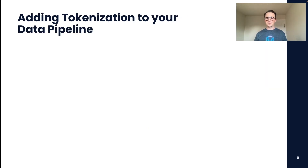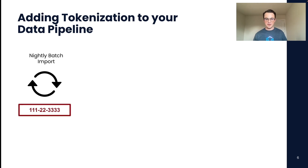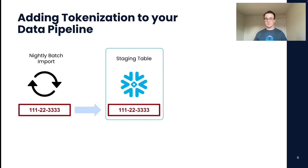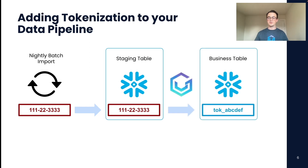Finally, how do we add tokenization into your data pipeline? Let's say we have a nightly batch import process that is taking in data from your vendors. This data has social security numbers in it and we want to import it into your Snowflake instance. The first thing we'll do is set up a staging table in Snowflake, configured so that only database administrators or administrators of the VGS application can access it. This is where we will initially import all of the data. Then, using the VGS native application, we will tokenize all of the data that enters into that staging table and move it over into the business table, which means your line of business can only ever get access to the tokenized data. Now let's jump into a demo and see this in action.